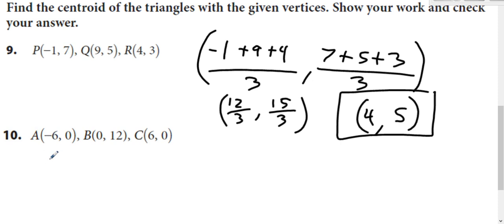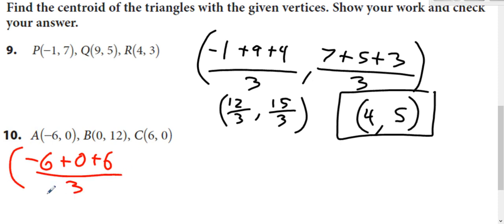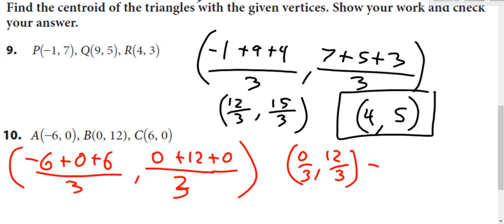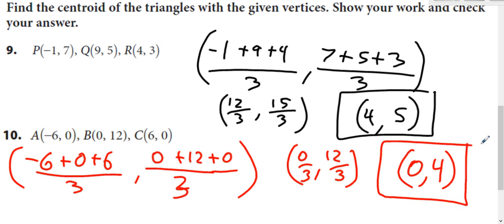Same thing for this next one. Add up the x's: negative six plus zero plus six divided by three. Zero plus twelve plus zero divided by three for the y's. We get zero over three and twelve over three. Zero divided by three is zero, twelve divided by three is four. The centroid is at (0, 4).